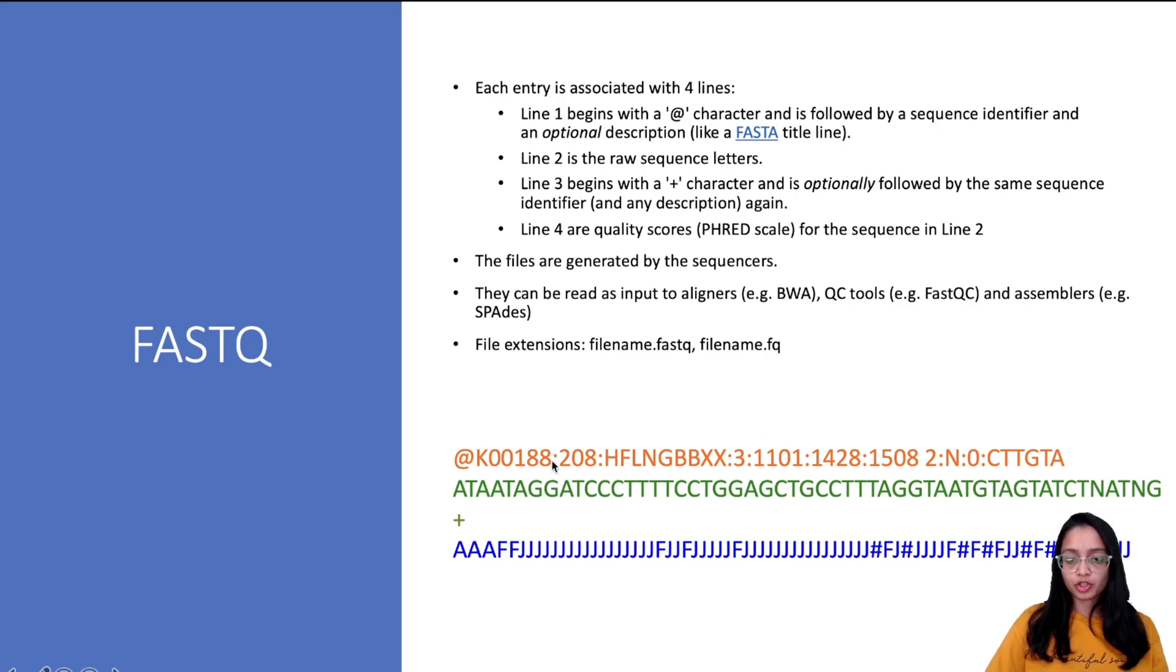The third line begins with a plus (+) character and is followed by the same sequence ID or description. The last line corresponds to the quality scores. Each character or letter here corresponds to a quality score, also called a PHRED score, and we'll be talking about this in more detail in the next slide.